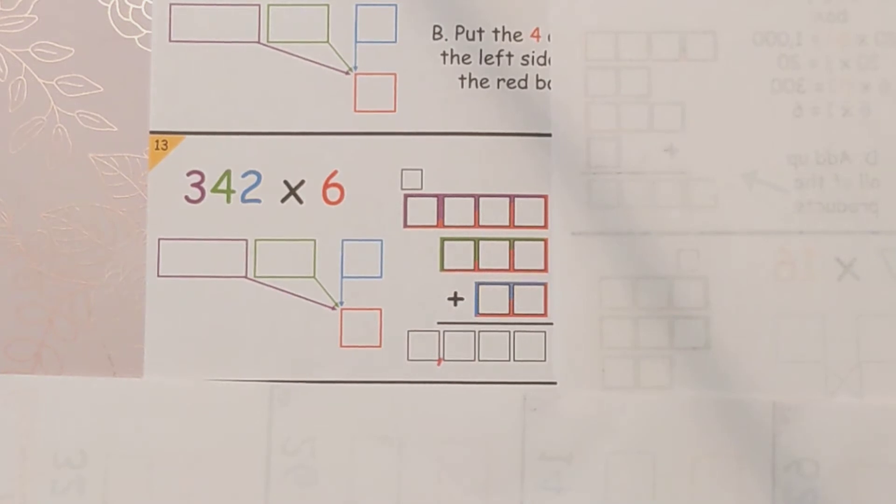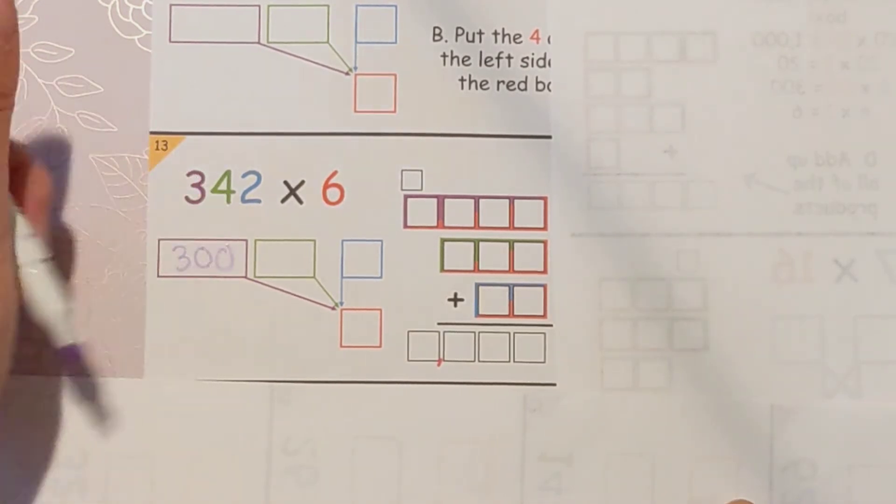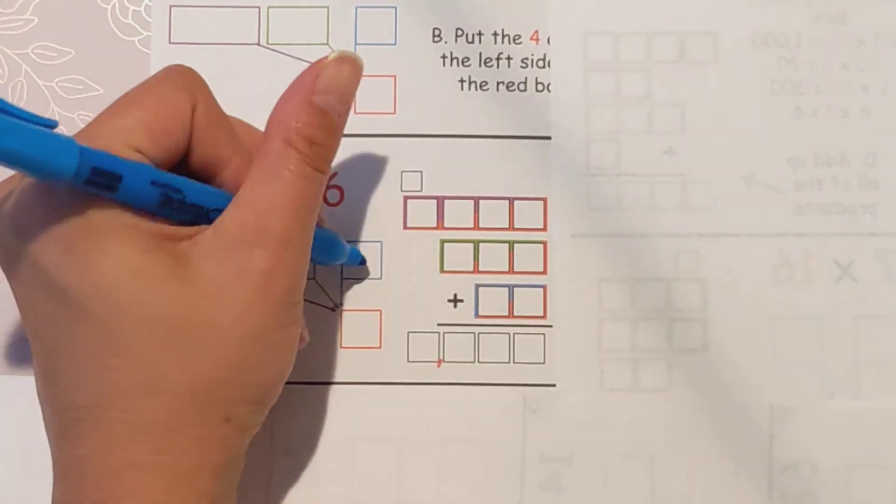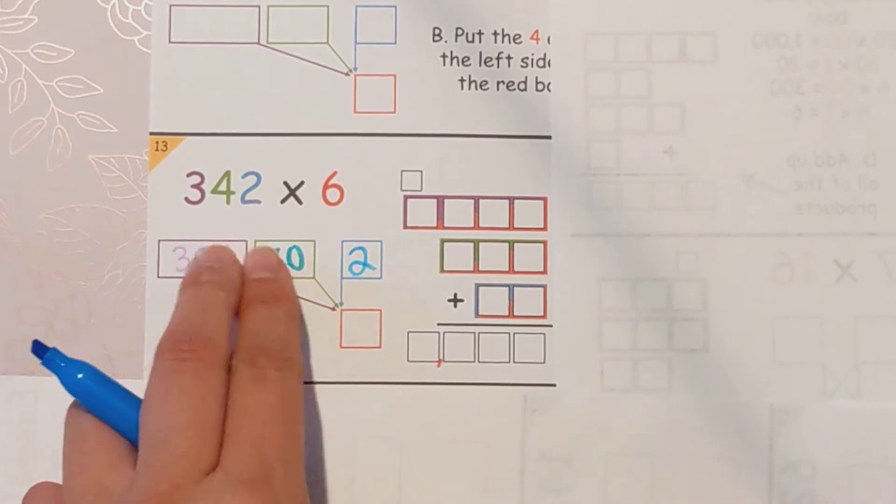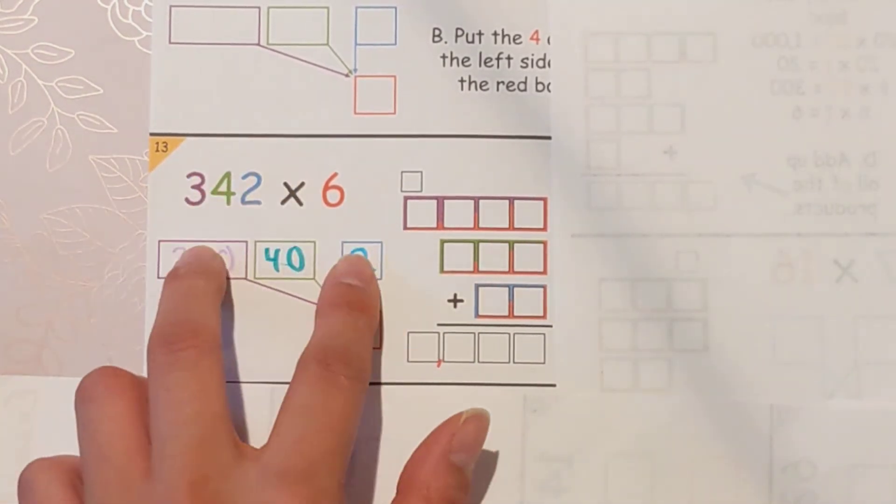So 342. The three is really a 300, the four is a 40, and the two is a two. This is how you write 342 in expanded form: 300 plus 40 plus two. That's this number. It's all on the same team. It all came together.